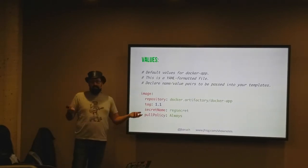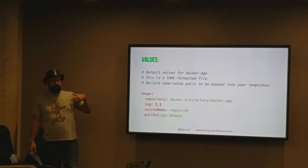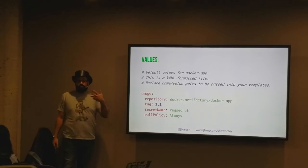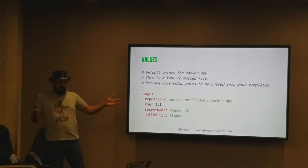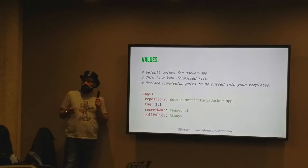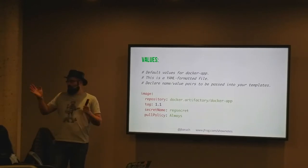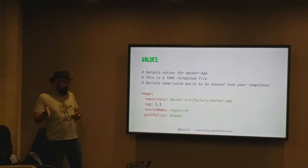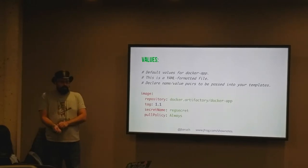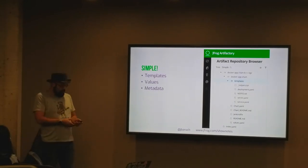You change the template with real values. Those values can come from a descriptor file - another YAML file - where you put things that change rarely, like repository and pull policy. Then you pass other values dynamically, such as the tag name or version, via environment variables or command-line parameters. This problem is solved as well.